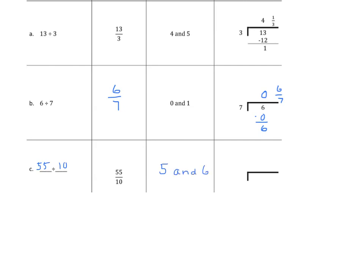Let's write the problem. The dividend goes under the tableau. The divisor goes outside. 10 goes into 55 five times. 5 times 10 is 50. I subtract and I get a 5. The 5 becomes my numerator. My divisor becomes my denominator. The answer is 5 and five-tenths.